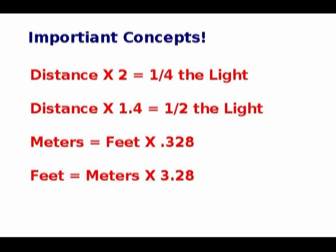These topics are so important, they're worth repeating. If you take your flash and double the distance between the flash and the subject, you're going to get a quarter of the light. If you take the distance between the flash and the subject and multiply it times 1.4, your subject is going to receive one half of the light. Remember, if your guide number on your flash is expressed in feet and you want to convert to meters, you multiply the meters times 3.28.